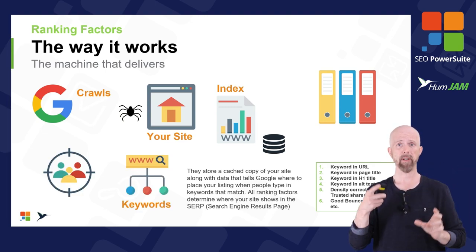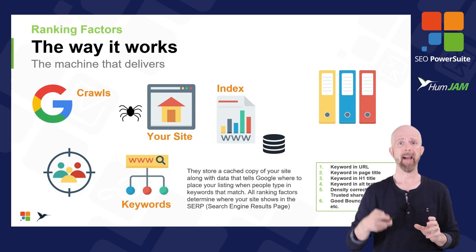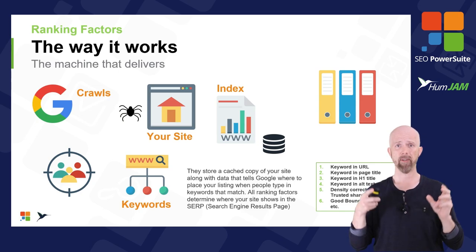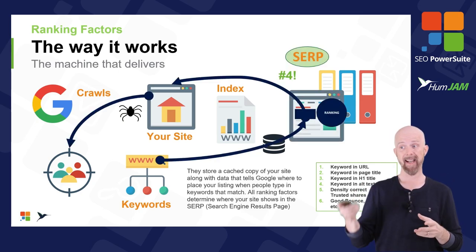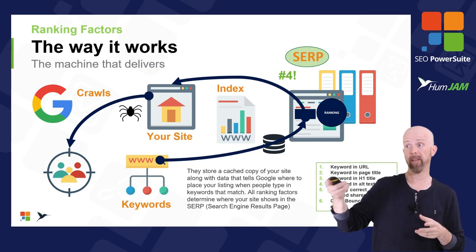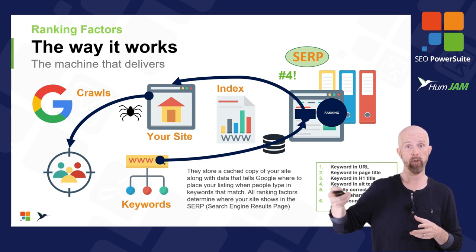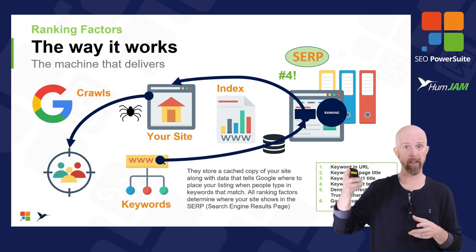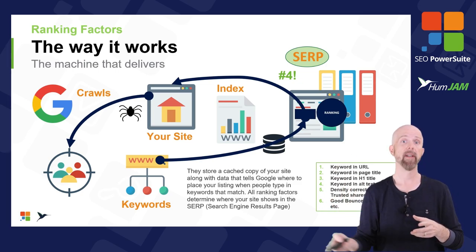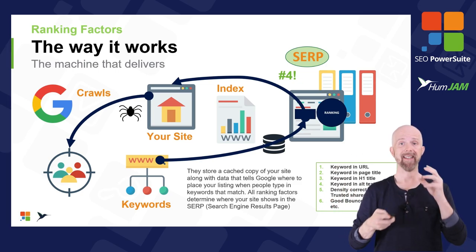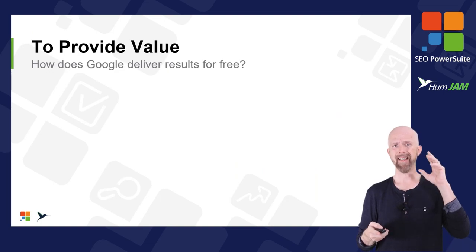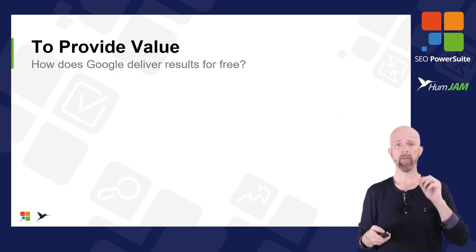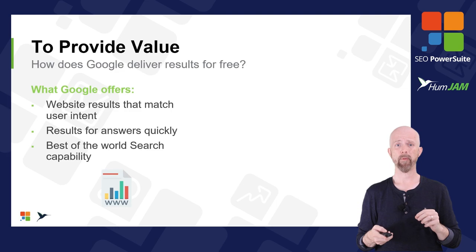Once Google indexes your site, the process works like this: a person types their keyword phrase into the search engine, Google determines where you show up in the SERP based on those ranking factors, and then delivers those results to the searcher.